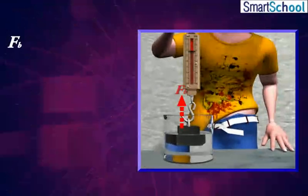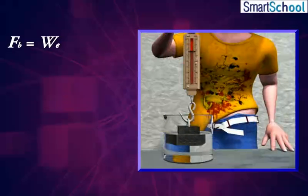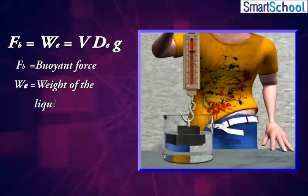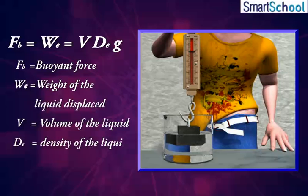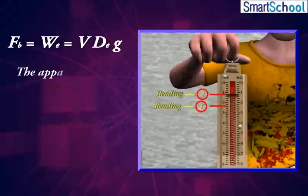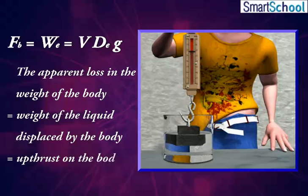Fb — buoyant force — is equal to the weight of liquid displaced, which equals V × ρ × g, where V is the volume, ρ (DE) is the density of the liquid, and g is acceleration due to gravity. The apparent loss in weight of the body is equal to the weight of the liquid displaced by the body, or the upthrust on the body.